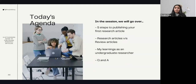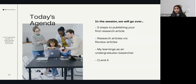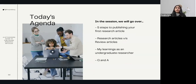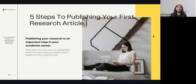Let's get into today's agenda. In this session, we will go over three major things. The first is the generic steps you can follow to publish your first research article. The second, we will go over the two most popular types of scientific publications — research articles and review articles — sharing a basic structure of both types. The third is a bonus: I'll be sharing a few of my personal learnings as tips for you all. And at the end, we'll have a short Q&A session.